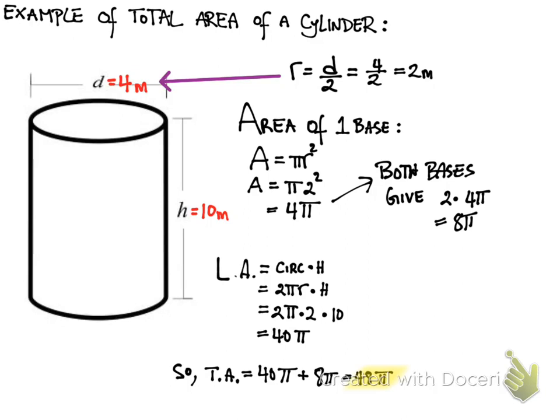The lateral surface, on the other hand, is the circumference of the base times the height. The circumference is 2 pi r times the height. Since the radius is 2, we do 2 times pi times 2 times the height 10, which gives us a total lateral area of 40 pi.